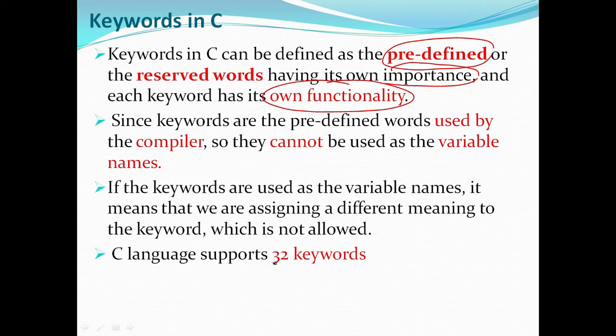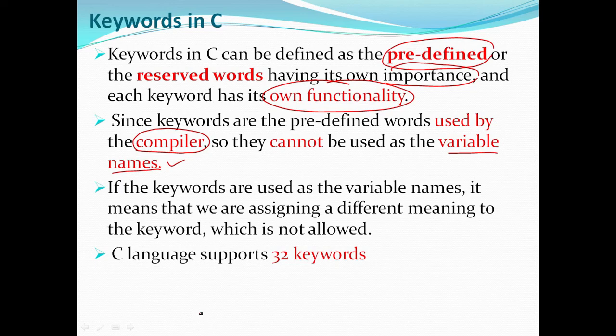Since the keywords are predefined words used by the compiler, they cannot be used as variable names. If the keywords are used as variable names, it means that we are assigning a different meaning to the keyword, which is not allowed. In C language, there are 32 keywords.